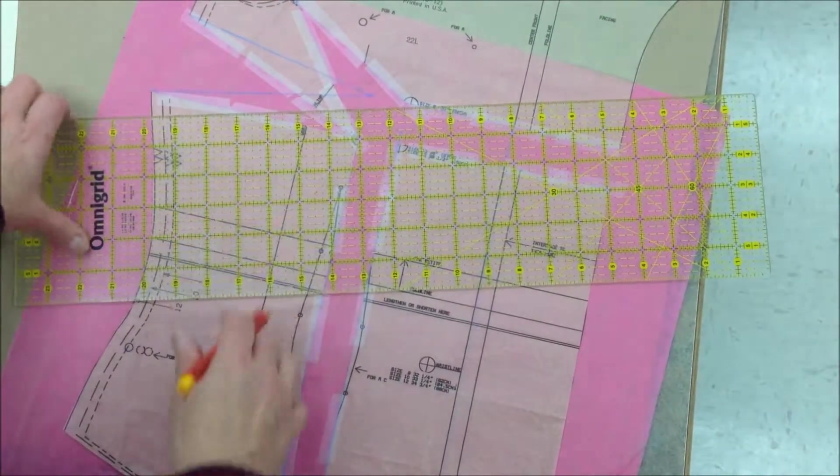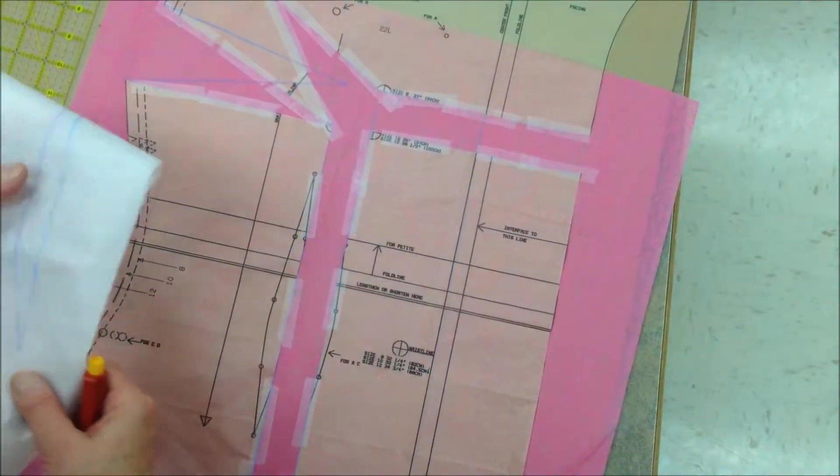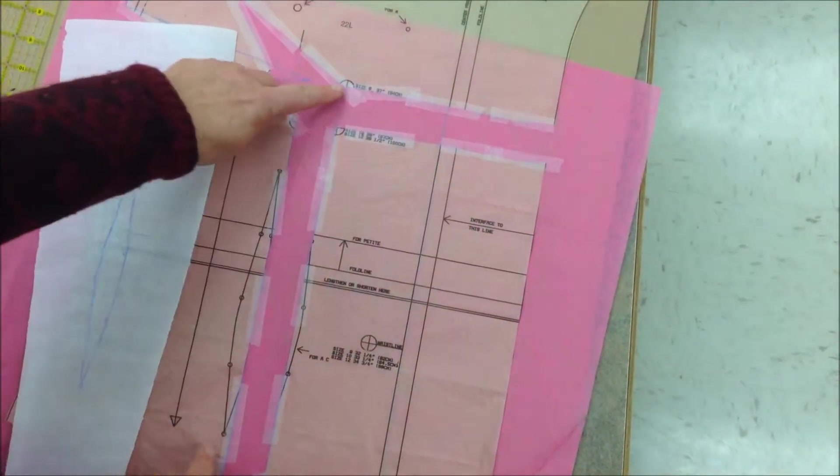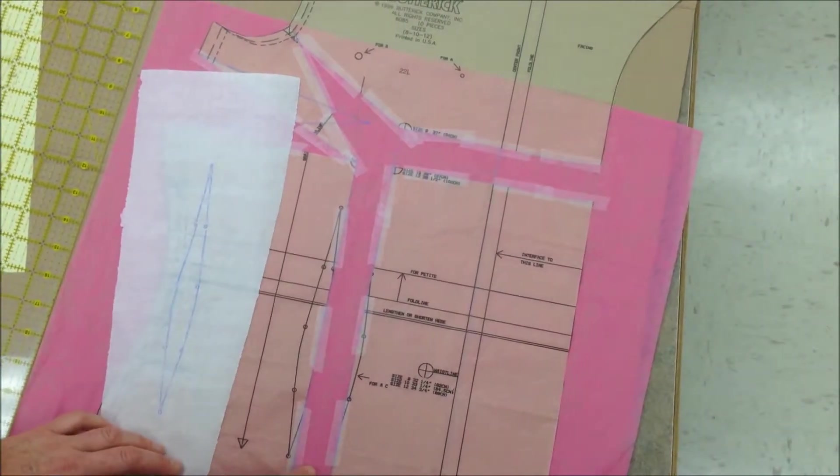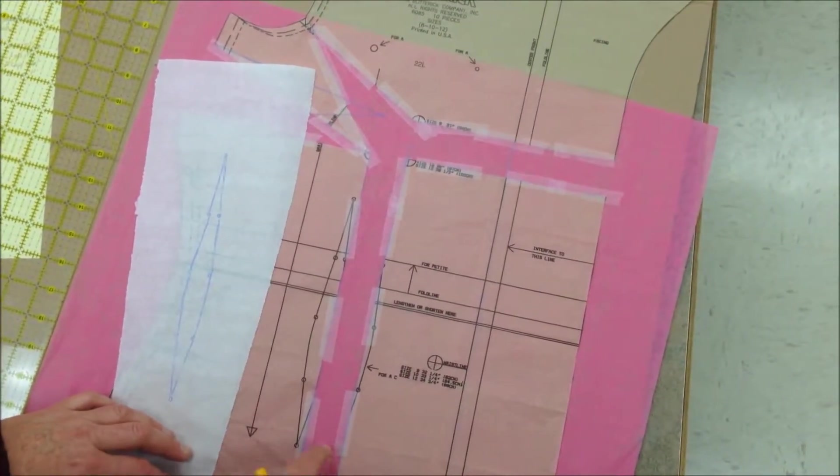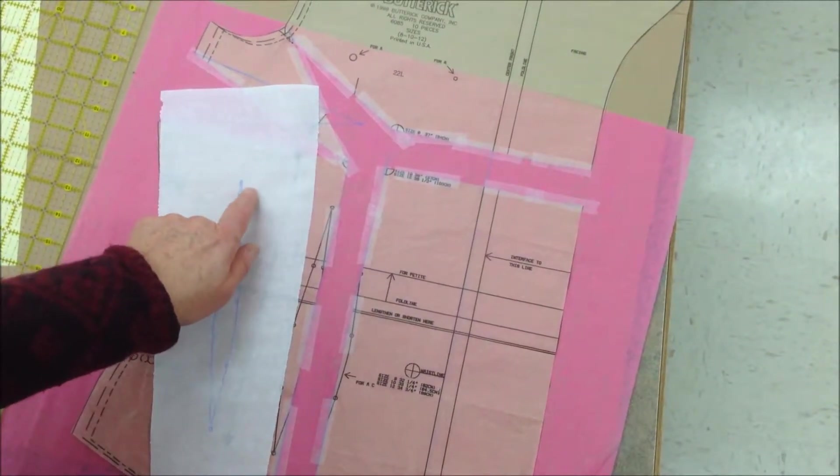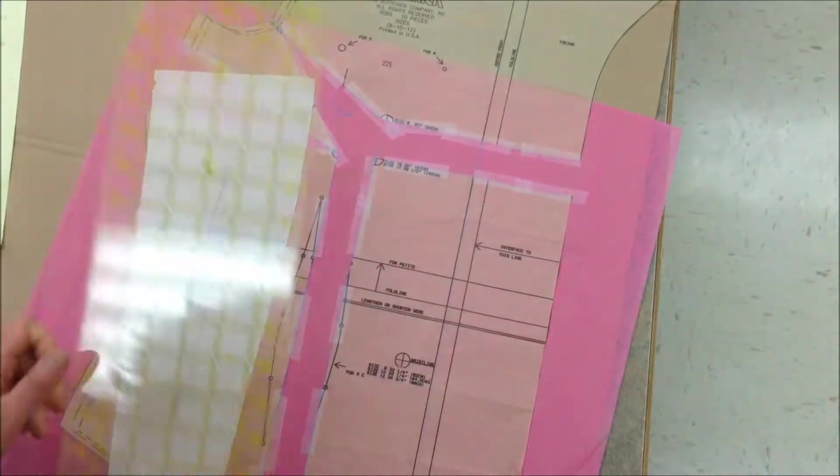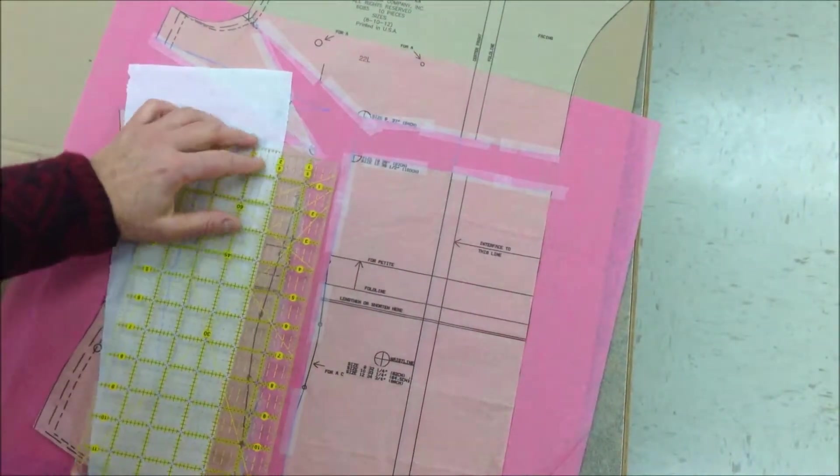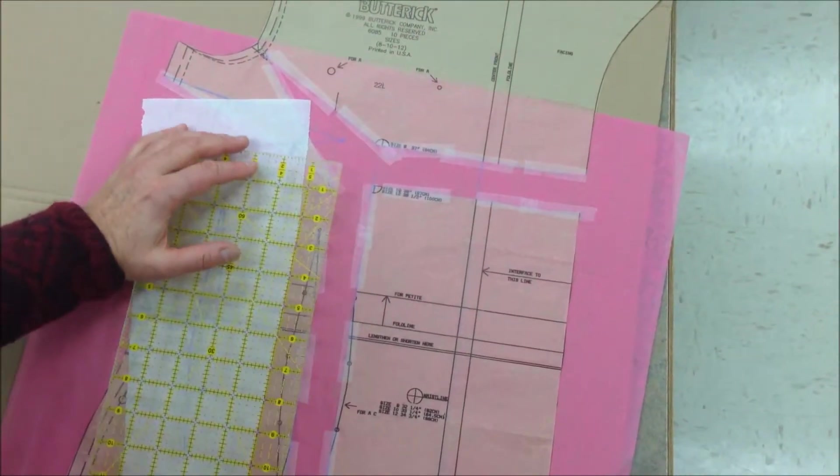Before we cut that, we're going to go ahead and draw in our waist dart. Notice we have lengthened almost an inch and a half here. So you have to decide if you want the dart to still be that long or if you want to have it shorter. We do want to bring the top of the dart though up closer to the apex. Let's just look what the original was. The original was about an inch and three-fourths.